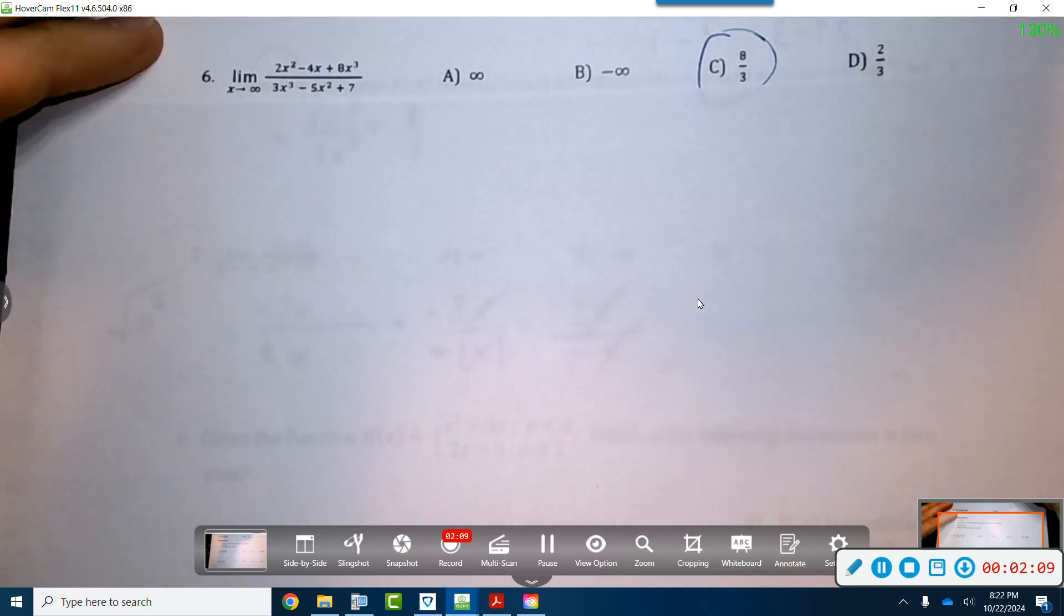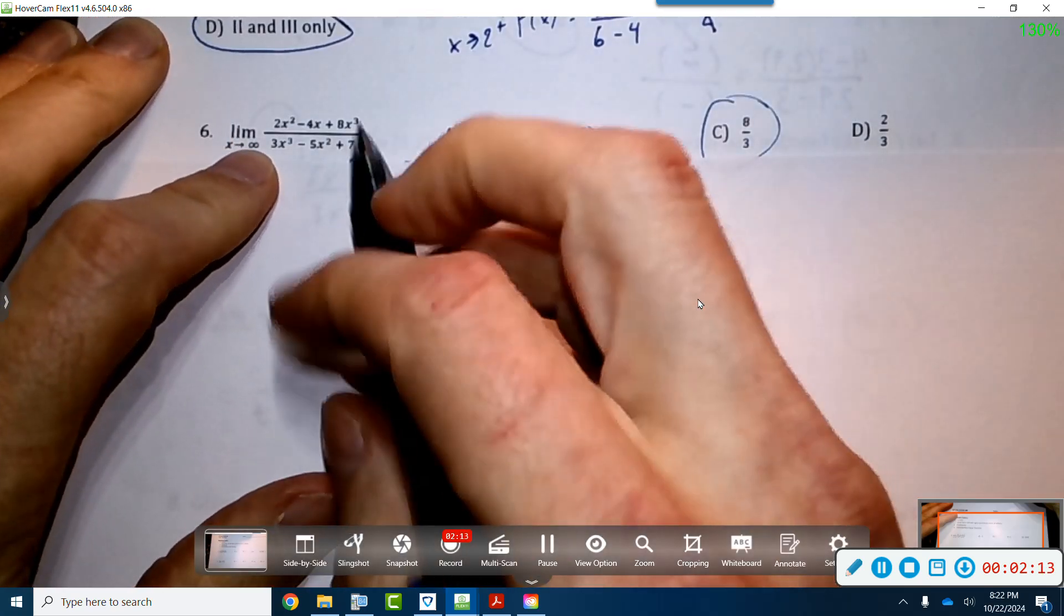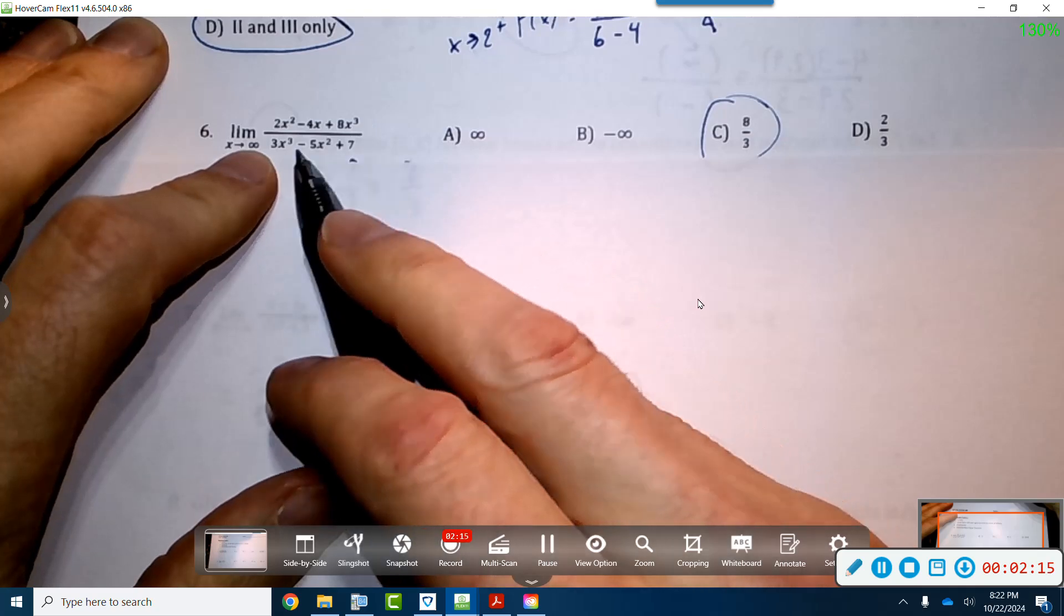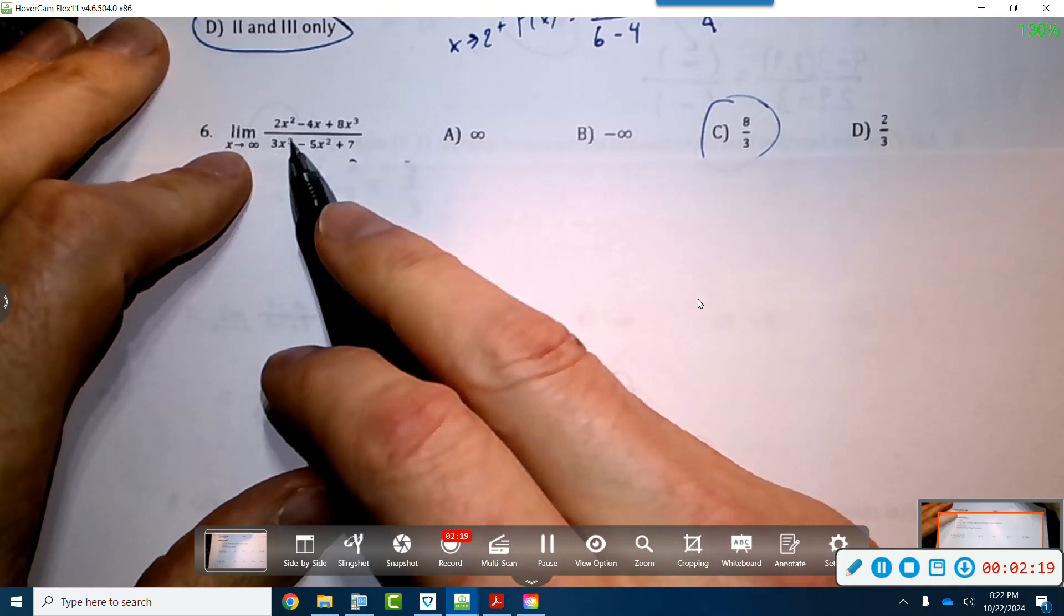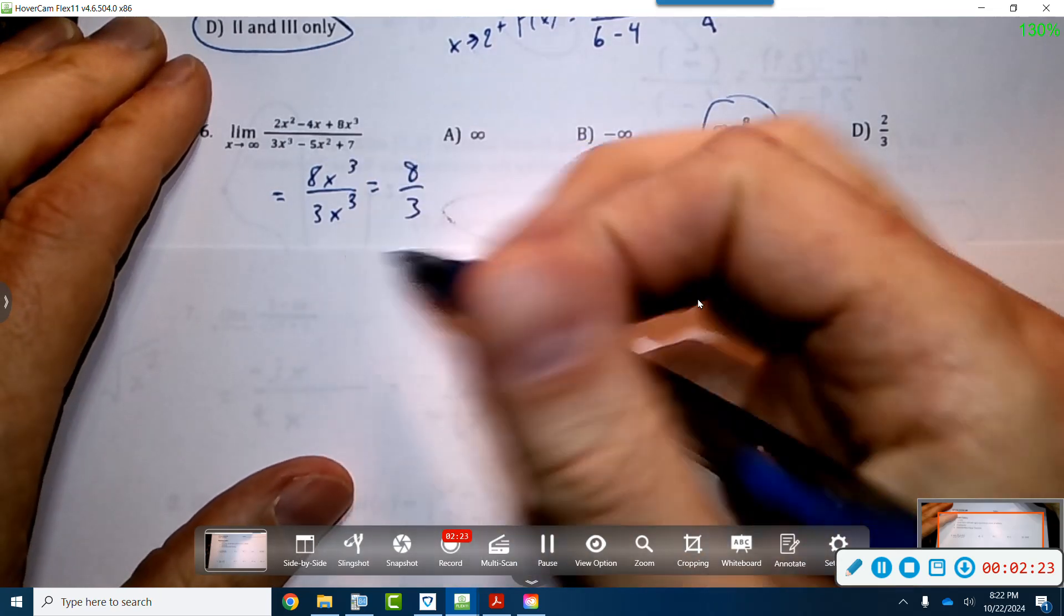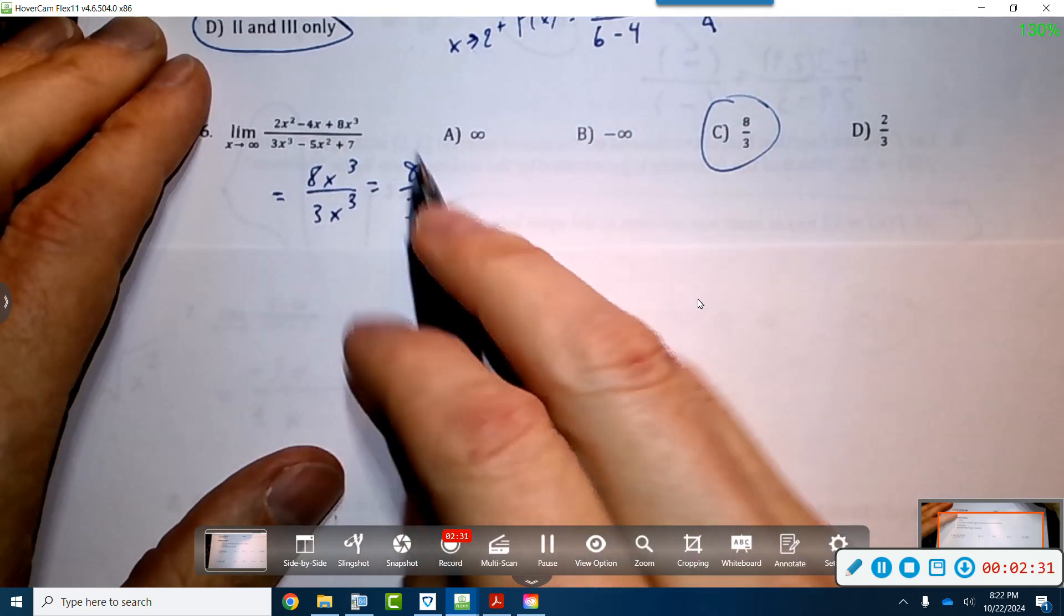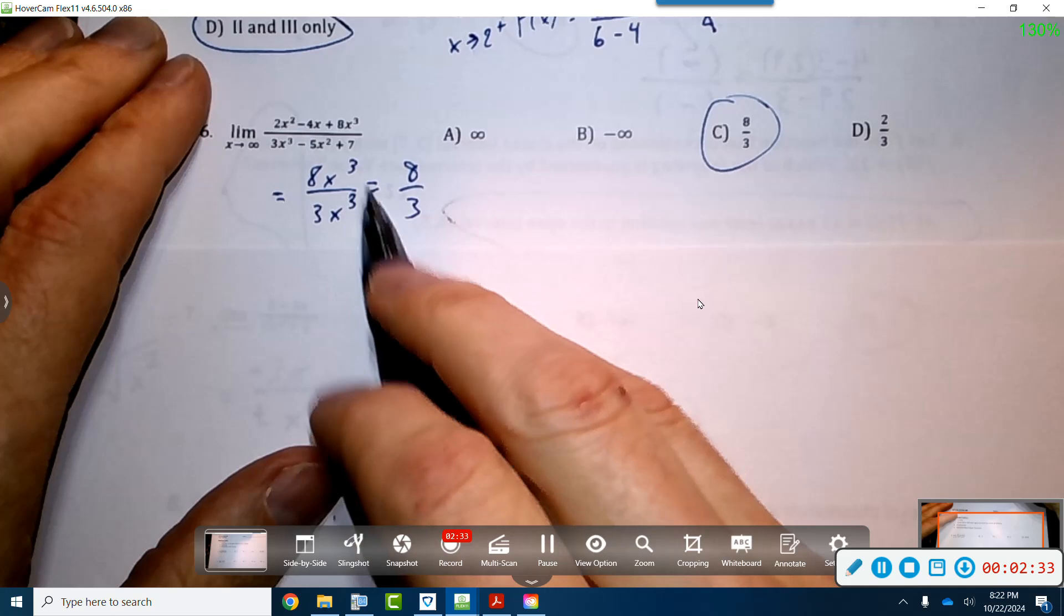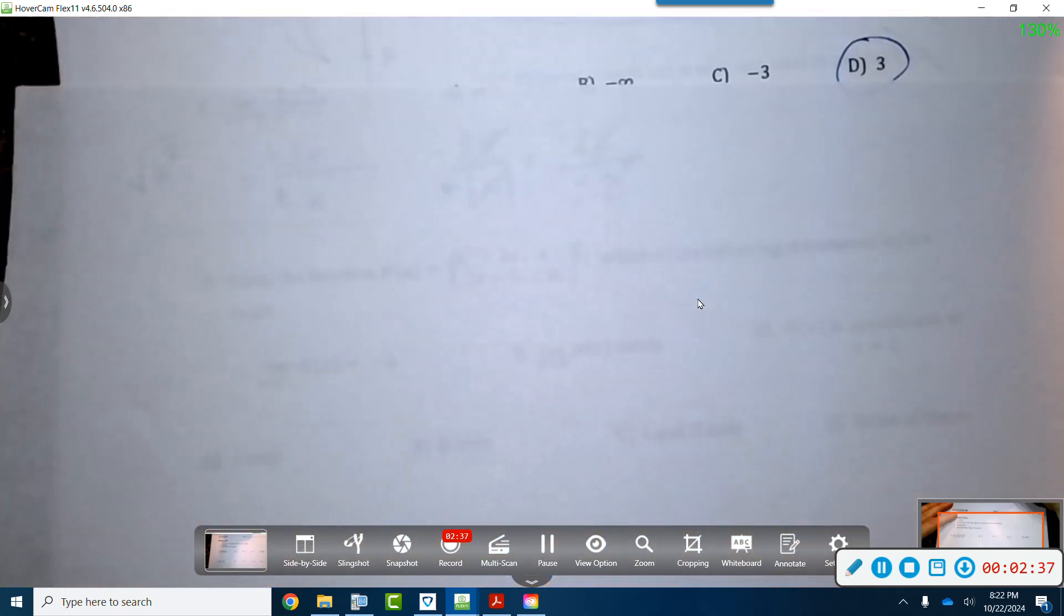Next, right here, what we're going to do is we see that this guy is going to infinity. So when you go to infinity, you'll notice that the higher power here is actually x to the third in the numerator, and x to the third in the denominator. So if you put those over each other, you don't care about the other things because they don't have that powerful influence that the highest exponent does. And so this guy ends up just being canceled out here because it's the same degree. You're going to get 8 over 3.